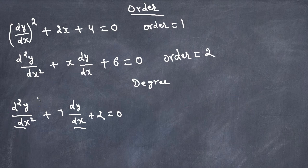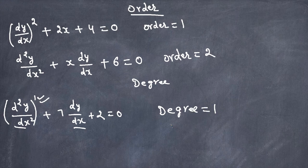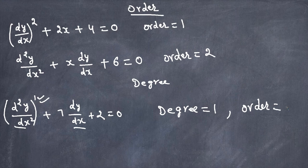What is the power of this highest derivative? If we put a power of 1 on it, that tells us the power of the highest derivative is 1, so the degree of this differential equation is 1. And for the order — it's a second derivative, the highest — so the order is 2.